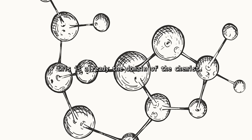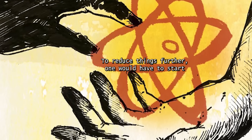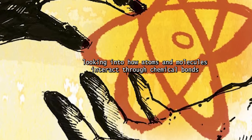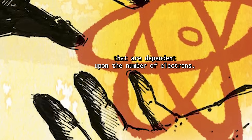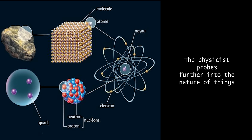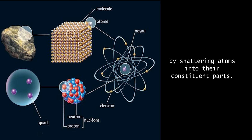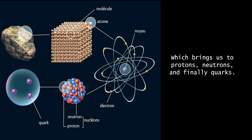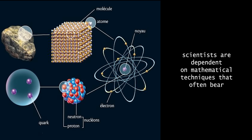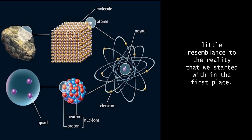This is already the domain of the chemist. To reduce things further, one would have to look into how atoms and molecules interact through chemical bonds that are dependent upon the number of electrons. But what, exactly, are atoms? The physicist probes further into the nature of things by shattering atoms into their constituent parts, which brings us to protons, neutrons, and finally quarks. Ironically, at this level of understanding, scientists are dependent on mathematical techniques that often bear little resemblance to the reality that we started with in the first place.